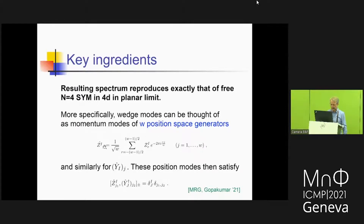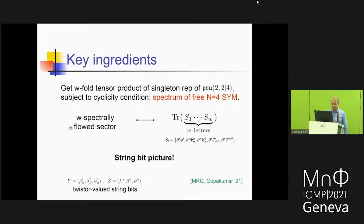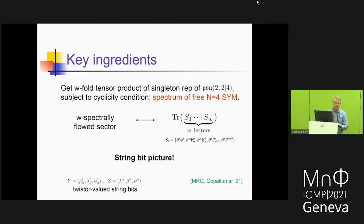If you take this at face value, you impose the U(1) condition and some physical state condition on the Fock space in the W-spectrally-flowed sector. You can think of the modes as momentum modes associated to position modes. The U(1) condition at every site gives the singleton condition at every site, leading to a cyclic invariance condition — a W-fold tensor product of the singleton representation modulo some cyclicity condition. This exactly describes the spectrum of N=4 super-Yang-Mills. The physical degrees of freedom from the W-spectrally-flowed sector are in one-to-one correspondence with all W-letter words inside the single trace of N=4, where the letters are exactly in one-to-one correspondence with the singleton representation. This is a string bit picture, but the string bits are made up from twistor fields.